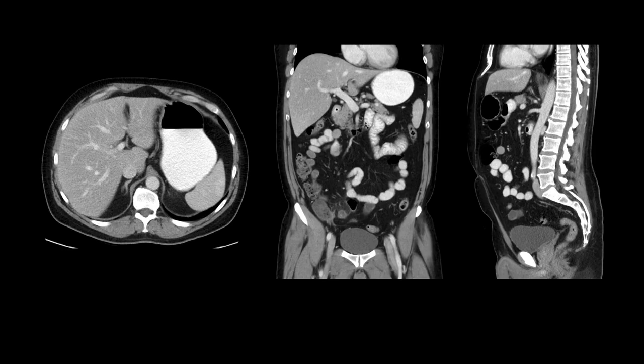So here we have our three key imaging planes. The axial plane reflects how the images are obtained and is the most used view, but the coronal plane is also very helpful and intuitive. Don't forget about bringing in the sagittal plane for problem solving and looking at the spine.